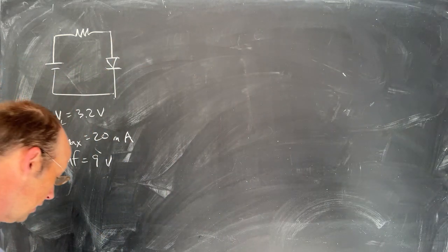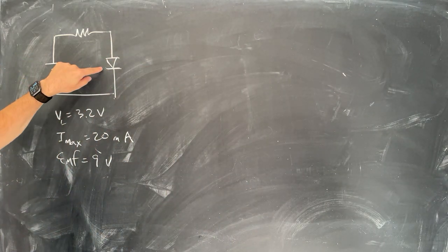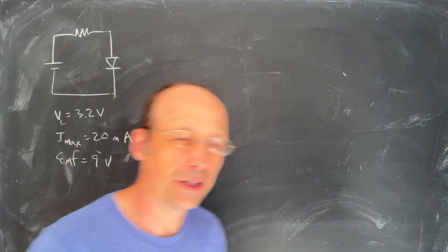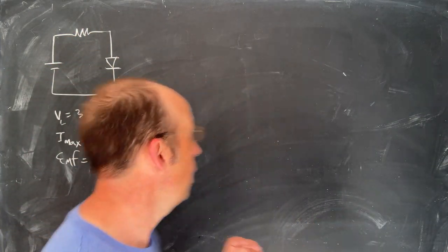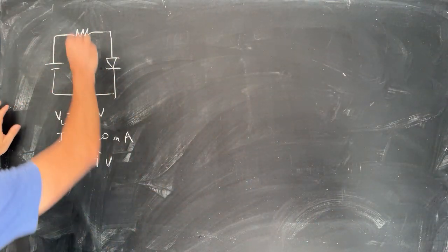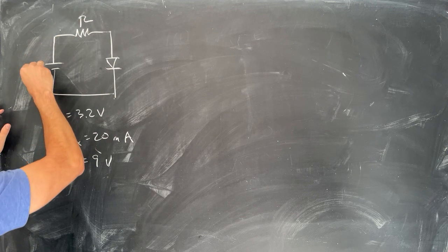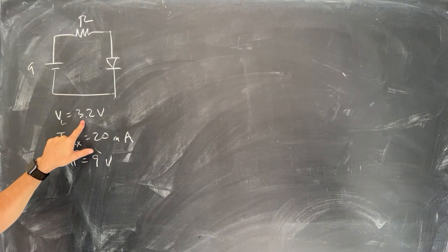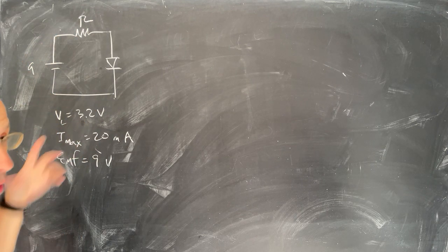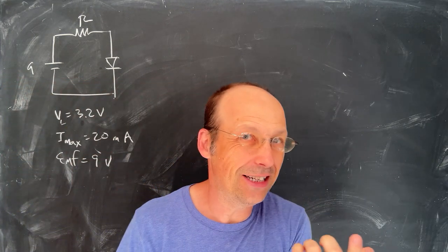So this particular bulb, in this case, I have a blue LED. This is our symbol for an LED. That's actually the symbol for a diode, but it is a diode. And I have a resistor R, and I want to hook it up to a 9-volt battery. So this blue LED requires 3.2 volts.